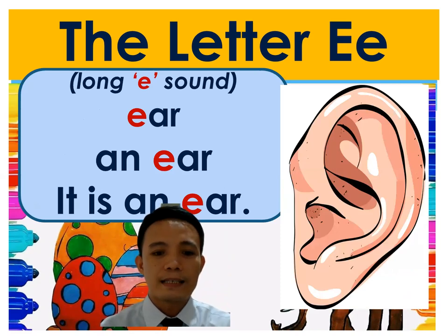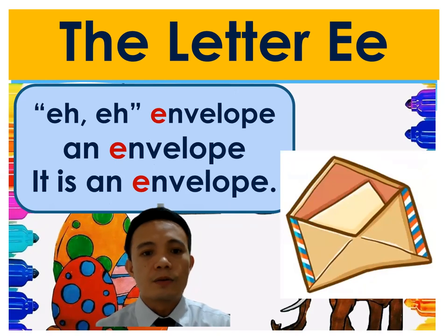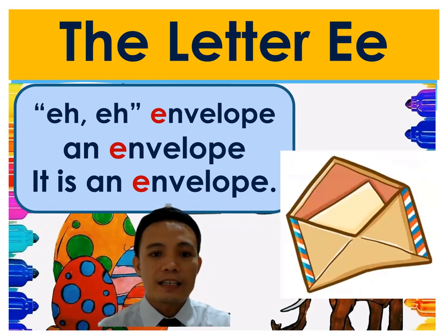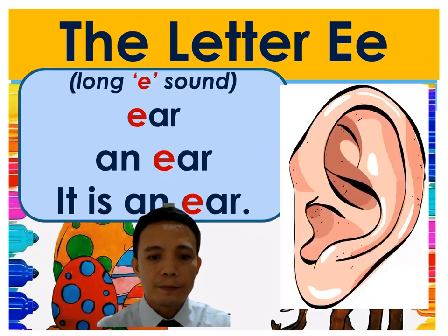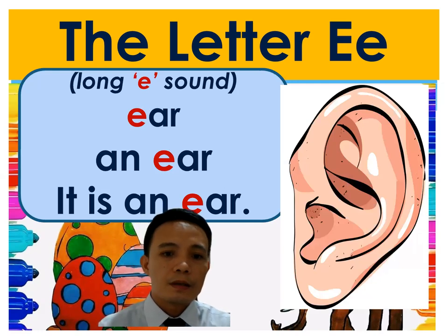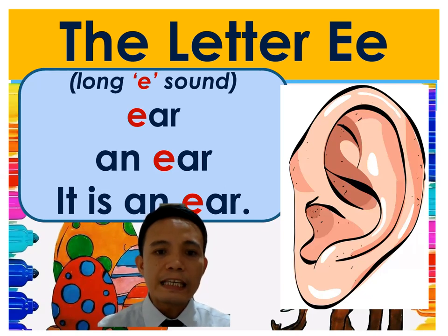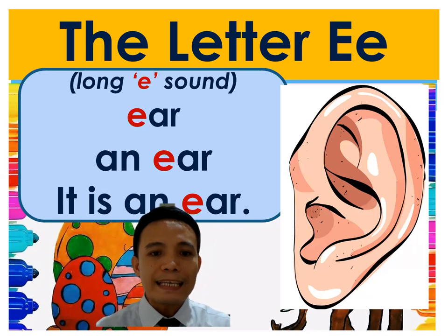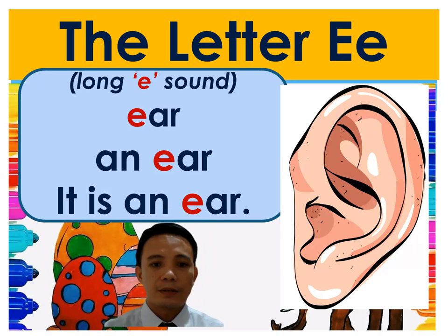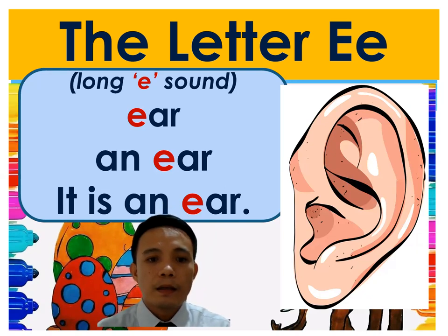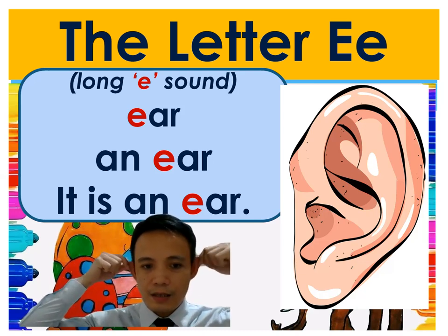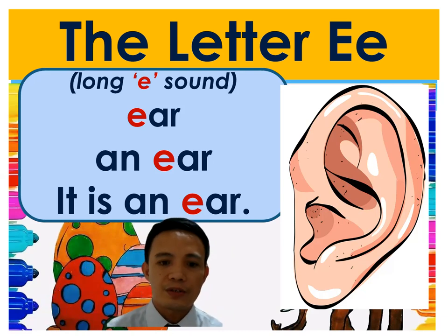Here are examples of the long E sound. On the previous slide we talked about the short E sound — 'eh' — as in elephant, eggplant, envelope, elbow. But here we have the long E sound. We have 'ear.' An ear — that is the long E sound. An ear. It is an ear. So we actually have two ears, but in the picture there's only one, so you say 'an ear.' It is an ear.